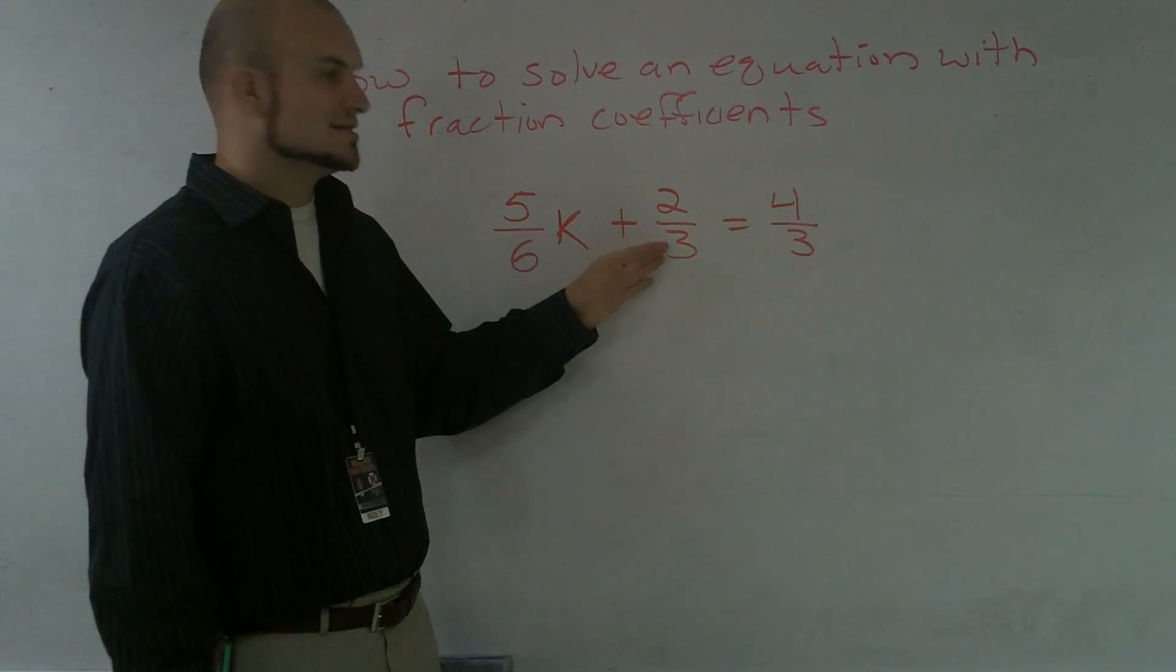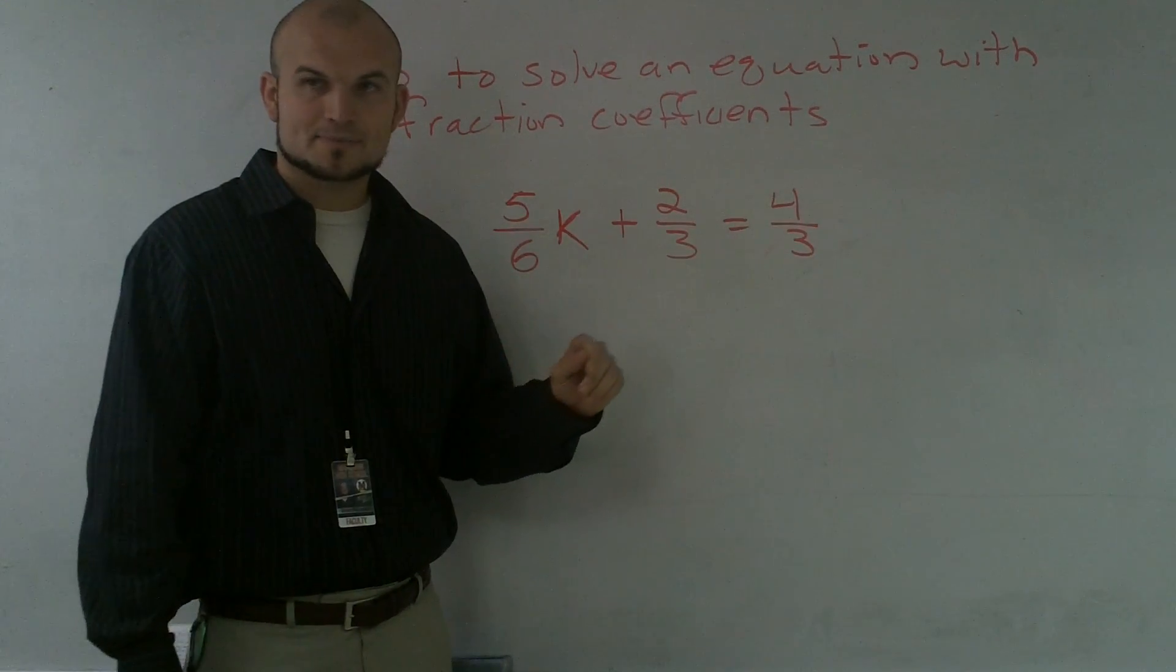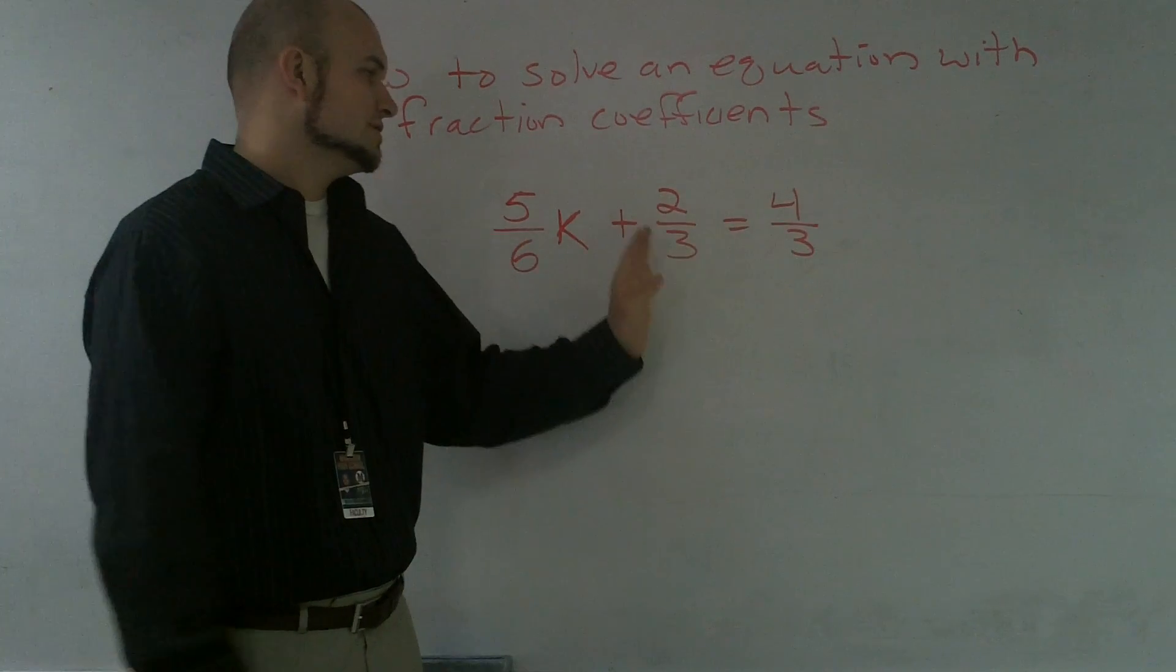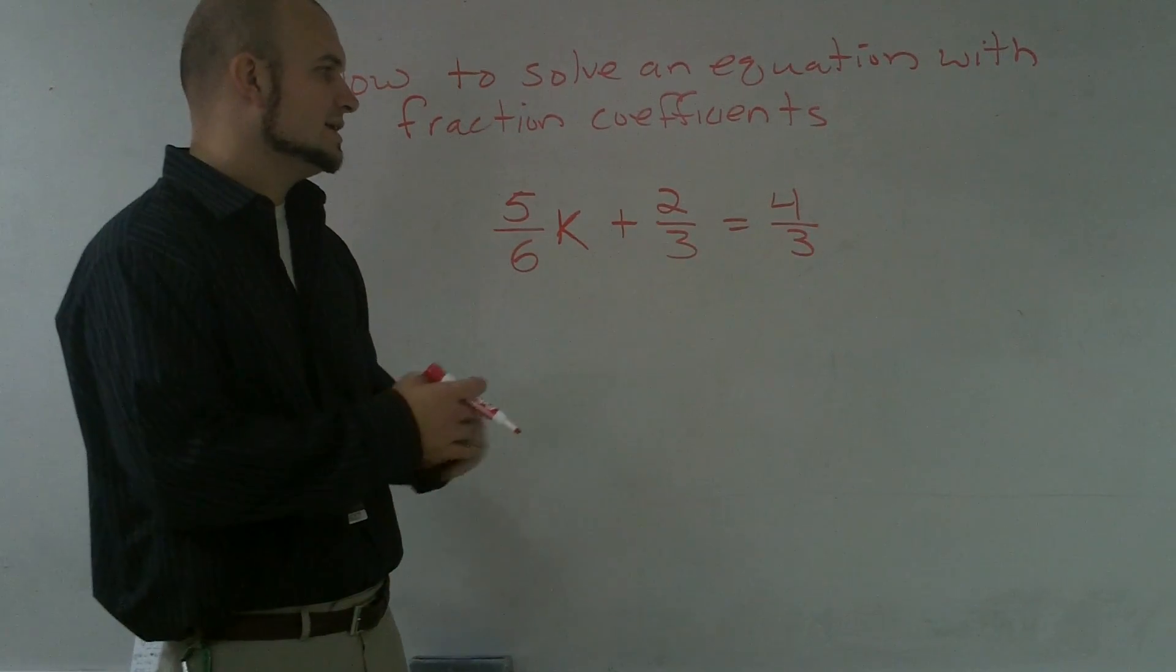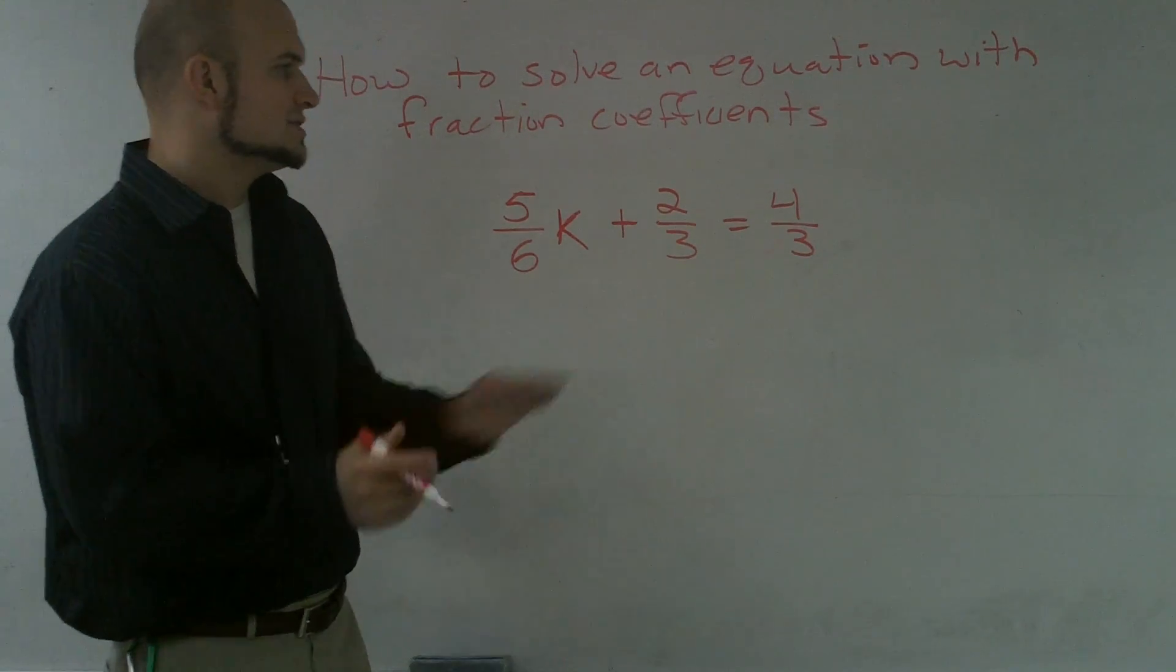So what you could do is go ahead and subtract two-thirds on both sides, and that would go ahead and, once you subtract your two-thirds on both sides, then you'd go ahead and multiply to get your answer.